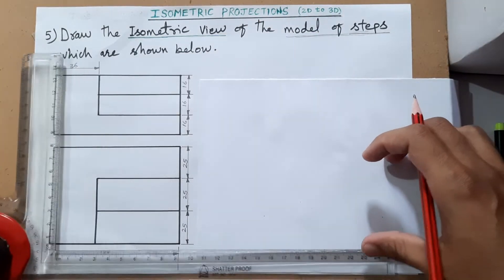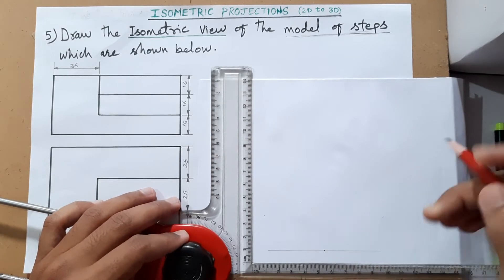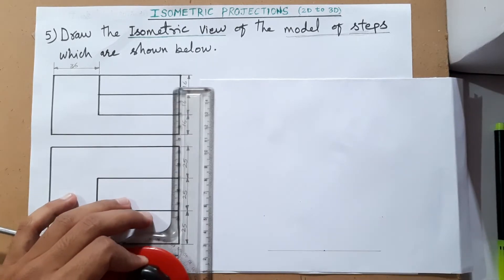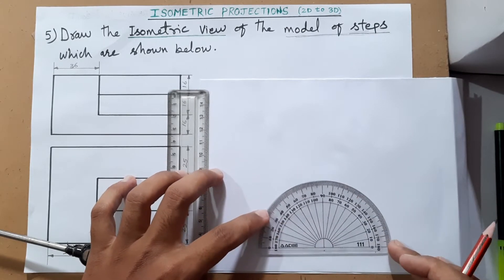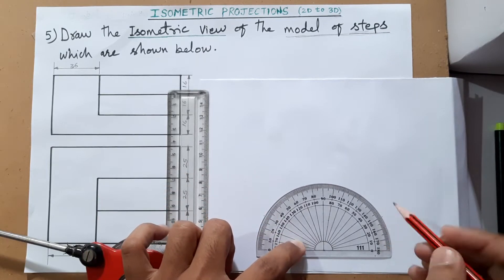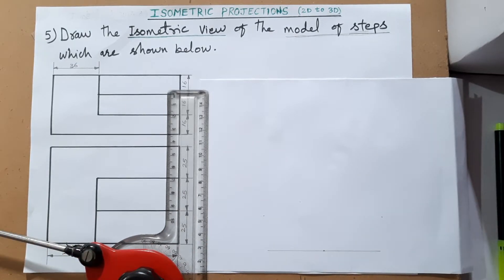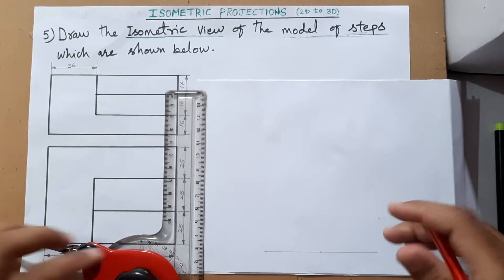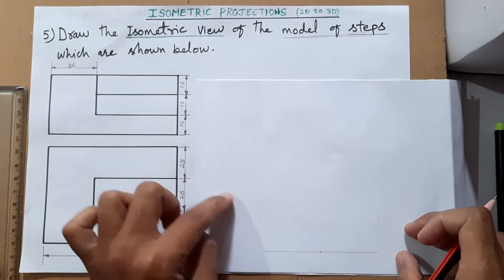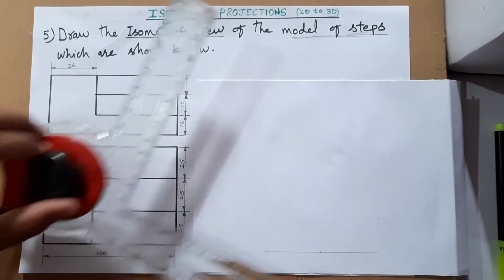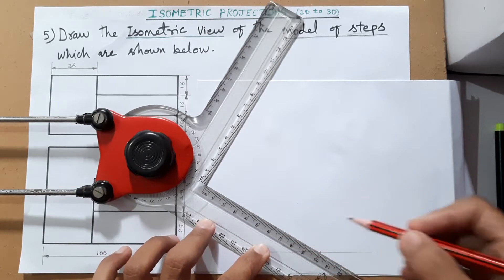First, the very first step is to take a horizontal reference line. I have drawn one here. With respect to this point, you have to take the protractor, keep it at this point, align it with this line, and take one point at 30 degrees and another point at 30 degrees — 30 degrees each on both sides — because we will be drawing isometric diagrams at 30 degrees. Then see the overall dimensions: here 100, here 25 three times giving 75.